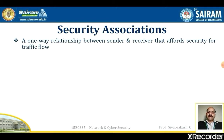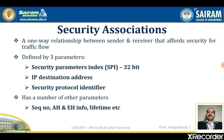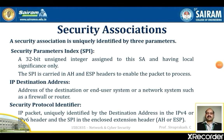A security association is a one-way relationship between a sender and receiver that offers security for the traffic flow, defined by three parameters: security parameter index, IP destination address, and security protocol identifier. A security association also has a number of other parameters such as sequence number, authentication header and encapsulation header information, lifetime, etc., and a database of security associations.